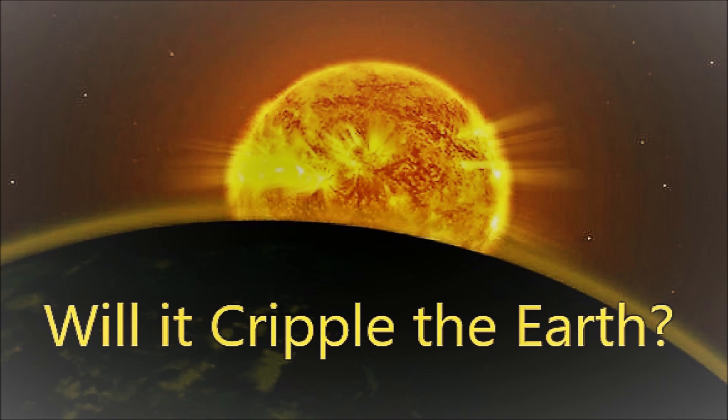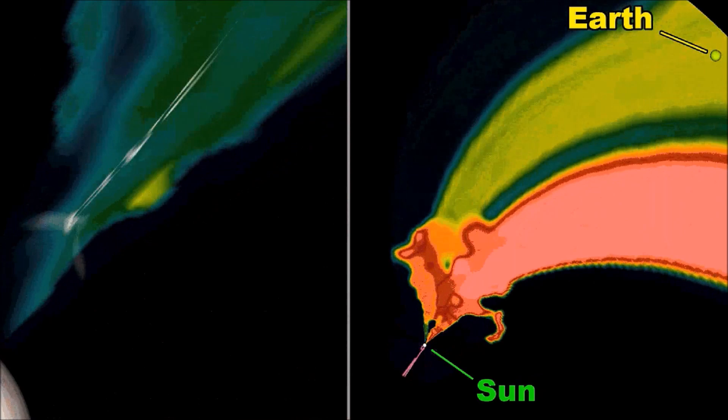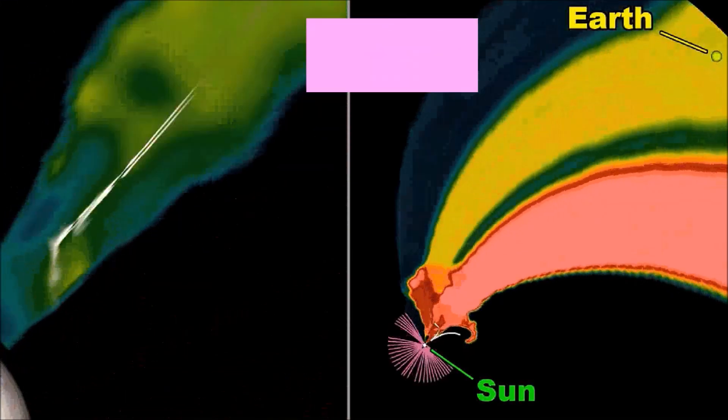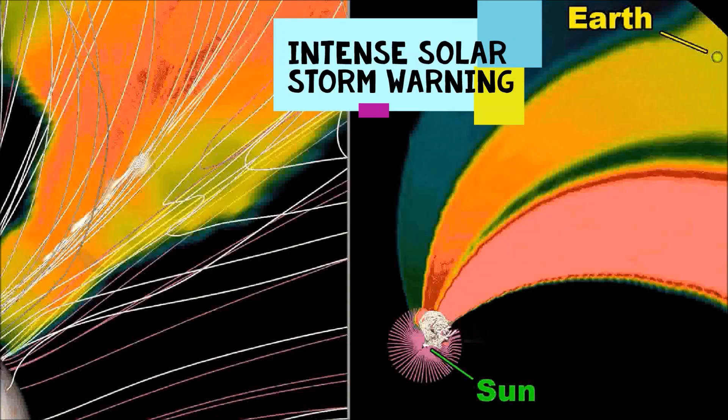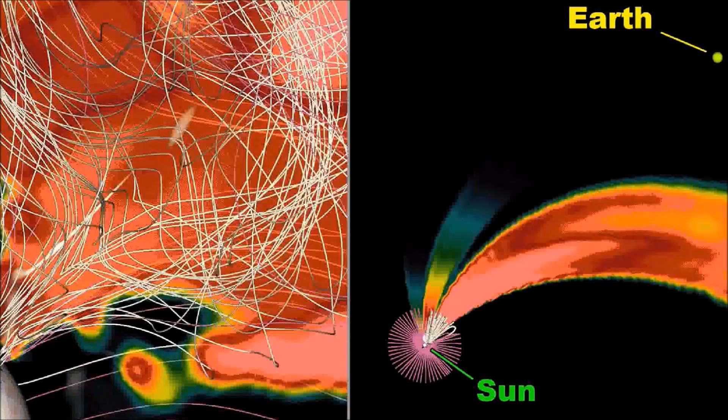The National Oceanic and Atmospheric Administration has warned that the incoming solar storm will produce elevated geomagnetic levels, but it may not actually produce the disastrous solar particles that were described by Carlson.